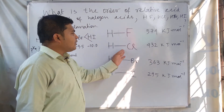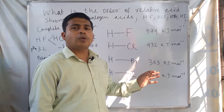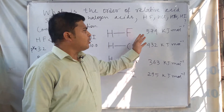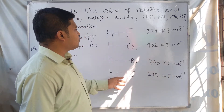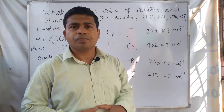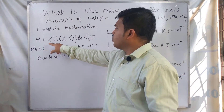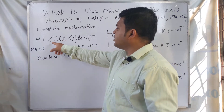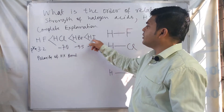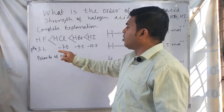So we have hydrofluoric acid, hydrochloric acid, hydrobromic acid, and hydroiodic acid. In aqueous solution these acids form the hydronium ion H3O⁺, meaning they release H⁺ from the molecule, which is why they are called acidic substances. The relative acid strength order is: HF is the weakest acid, then HCl, then HBr is more acidic than HCl, and HI is the most acidic.